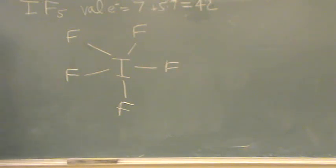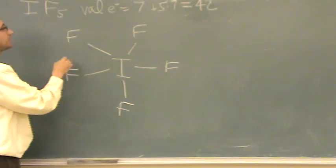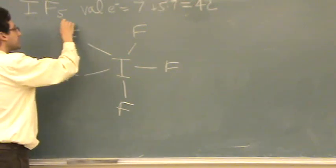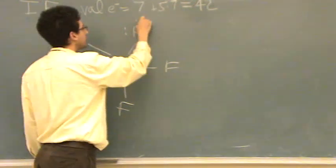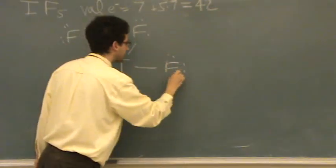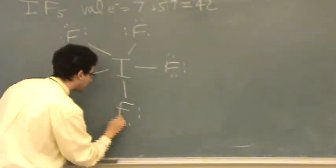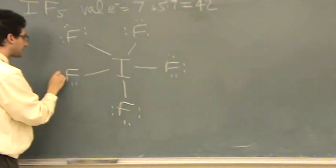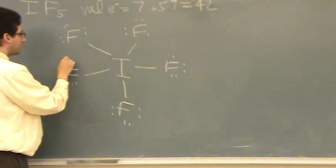Okay, I've got ten of 42. Let's go to my terminal atoms. Ten, twelve, fourteen, sixteen, eighteen, twenty, twenty-two, twenty-four, twenty-six, twenty-eight, thirty, thirty-two, thirty-four, thirty-six, thirty-eight, forty.